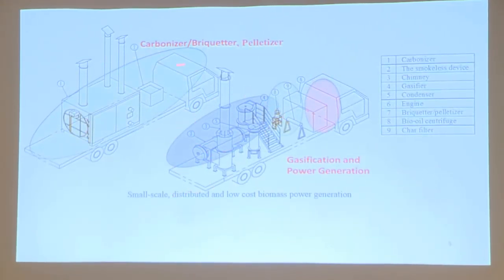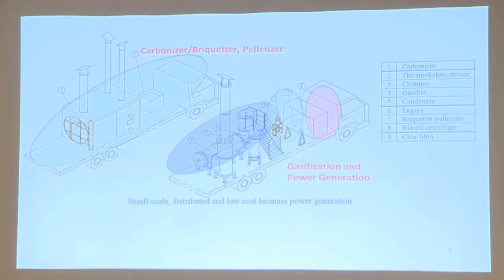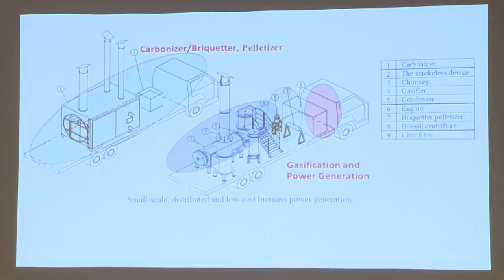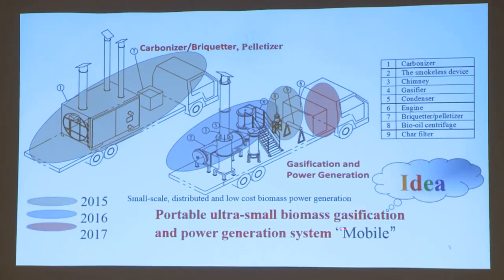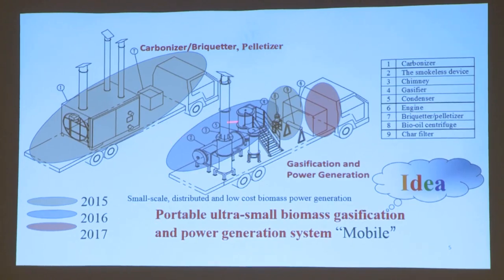Our concept consists of two parts. The first is biomass pretreatment, which includes carbonization and densification. The second is the gasification and power generation system. Biomass and waste power generation systems are becoming larger and more centralized, but mobile, small-scale distributed power generation is still a trend of modern technology. There are big needs for this technology in disaster areas of developed countries and in unelectrified rural areas of developing countries.